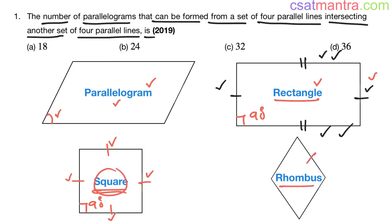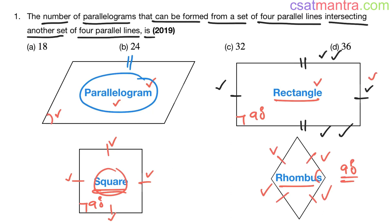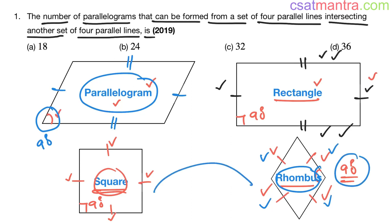When it comes to a rhombus, all sides are equal and opposite sides are parallel, but the angle need not be 90 degrees. In a general parallelogram, all sides need not be equal and the angle is not necessarily 90 degrees. In a rhombus all sides are equal but the angle is not 90 degrees — it is an extension of the square, where the angle is not necessarily 90 degrees.